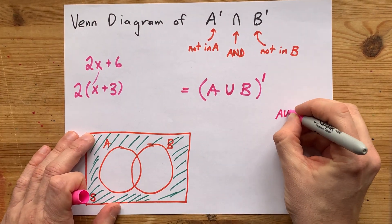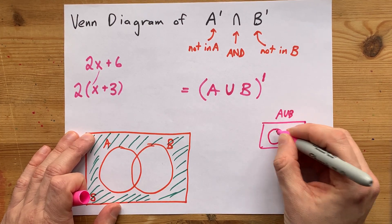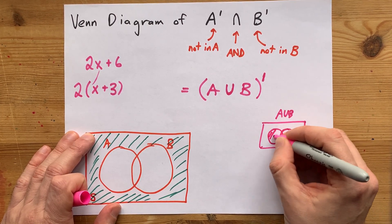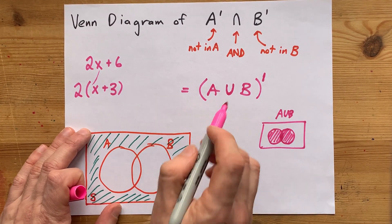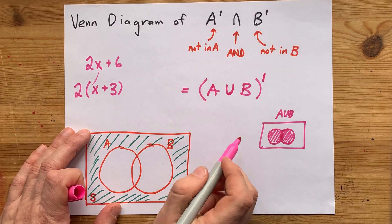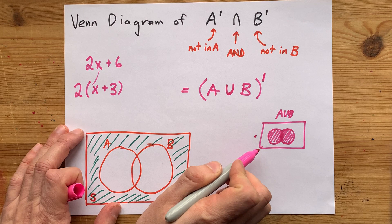Now, I'd just like to remind you that A union B is when you get to shade anything that is inside of A and also you can shade whatever's inside of B.